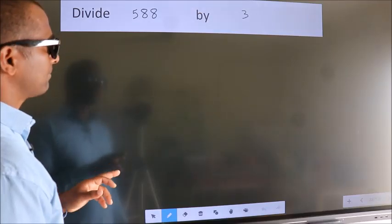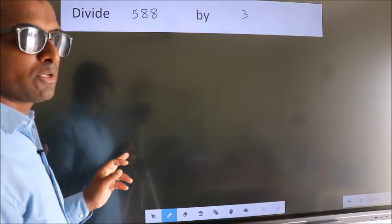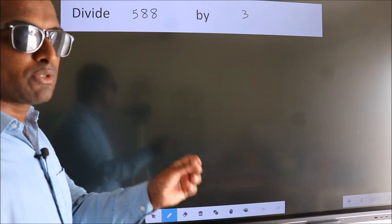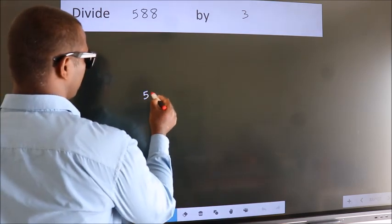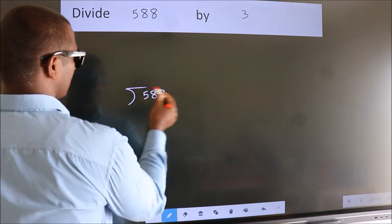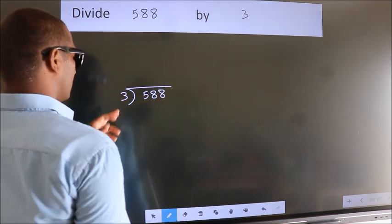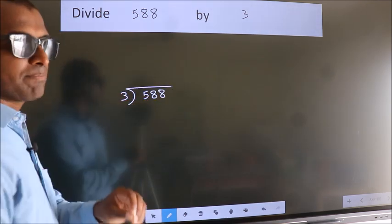Divide 588 by 3. To do this division, we should frame it in this way. 588 here, 3 here. This is your step 1.